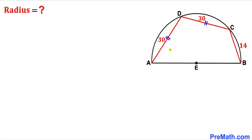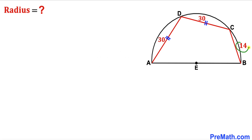Welcome to PreMath. In this video we have three chords AD, CD, and BC fully confined in a semicircle with center E, such that chords AD and CD are equal in length, each of them 30 units, whereas chord BC is 14 units. Our task is to calculate the radius of this semicircle.